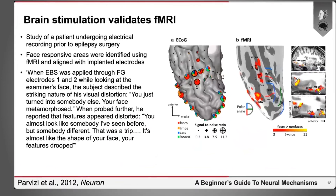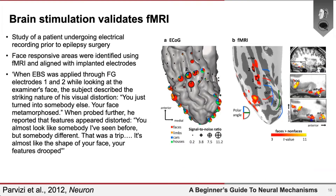We can validate functional MRI using brain stimulation. In a study by Josef Parvizi and colleagues, functional MRI was first performed on an individual about to undergo epilepsy surgery, isolating regions in the temporal lobe that respond to pictures of human faces. Electrodes were then placed on those fMRI-responsive areas, and electrical current was used to disrupt activity there. The individual reported: 'You just turned into somebody else. Your face metamorphosed.' This demonstrates a strong link between the functional role of regions identified by fMRI and their actual perceptual function.